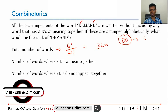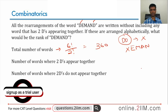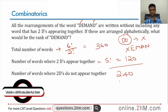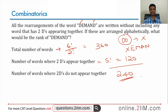Number of words where the two D's appear together: take the two D's, put them into a box, call it X. Effectively we are rearranging X, E, M, A, N — wherever X appears, the two D's sit inside. X, E, M, A, N can be rearranged in five factorial ways, or 120 ways.